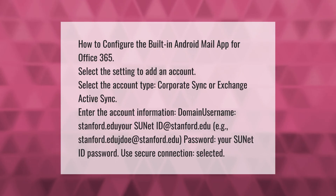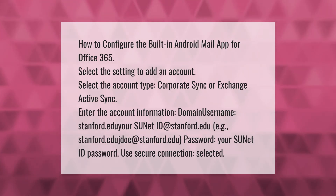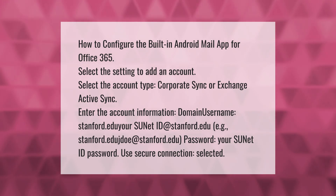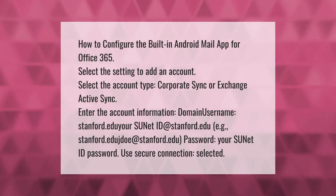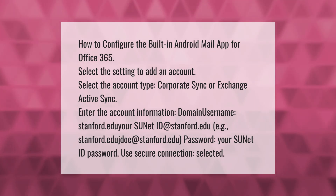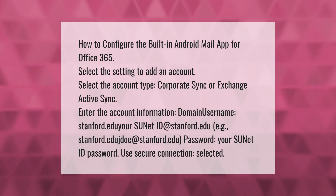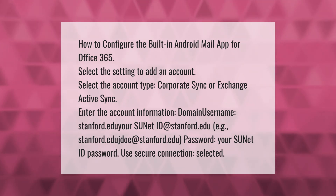To configure the built-in Android mail app for Office 365, select the setting to add an account. Select the account type — Corporate Sync or Exchange ActiveSync. Then enter your account information: domain, username — stanford.edu followed by your SUNet ID.